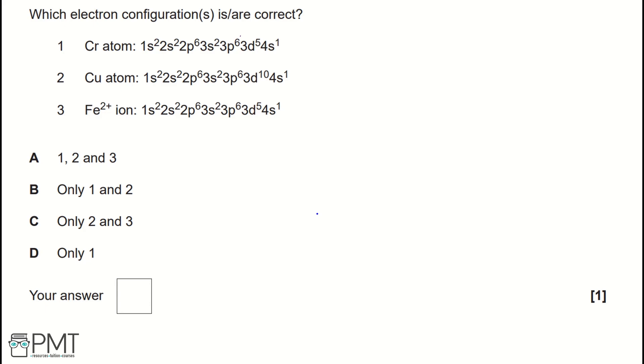3. Fe2 plus iron, 1s2, 2s2, 2p6, 3s2, 3p6, 3d5, 4s1